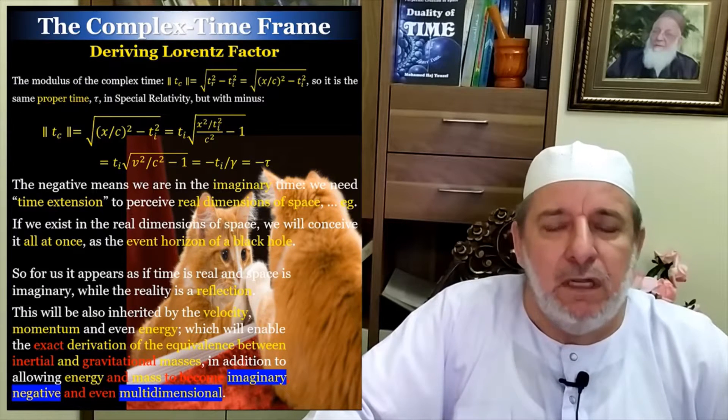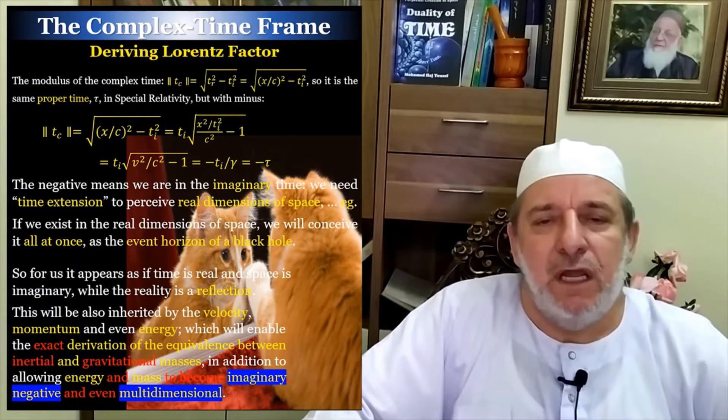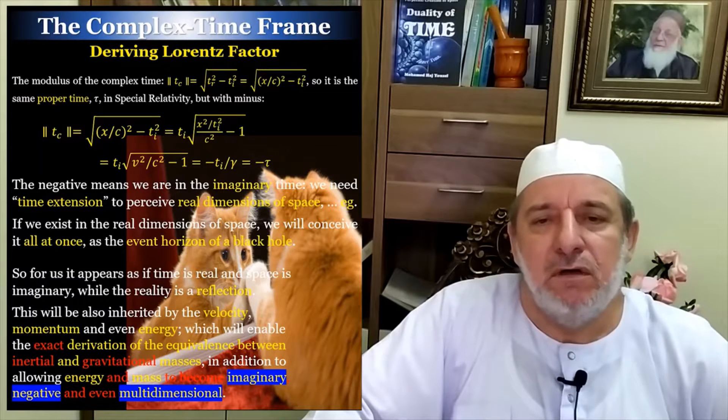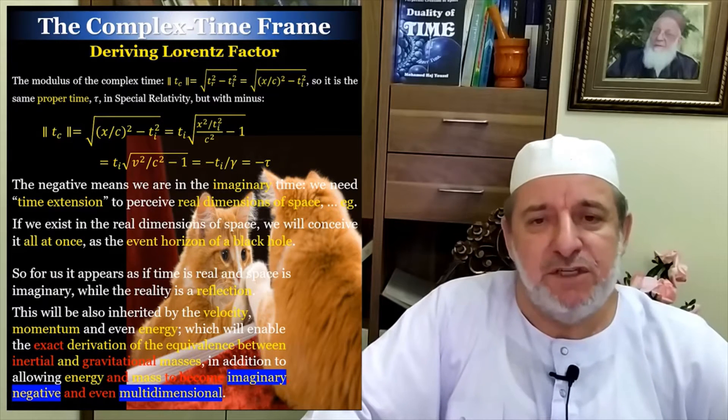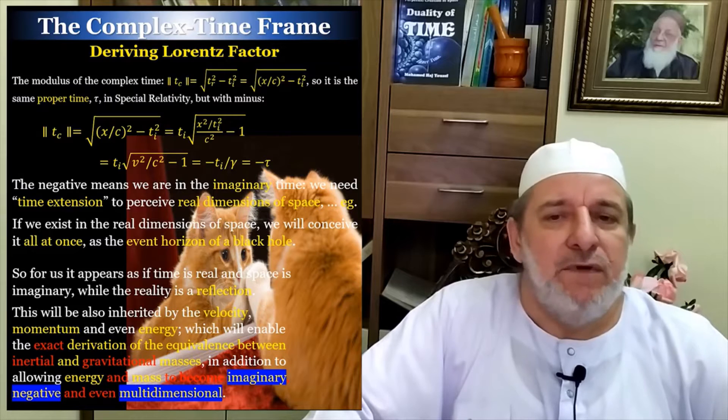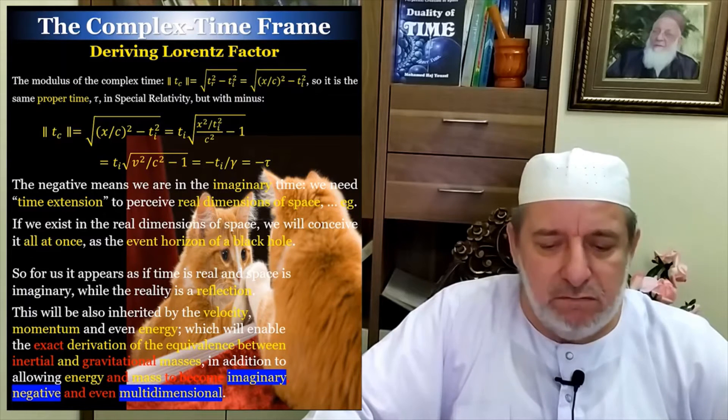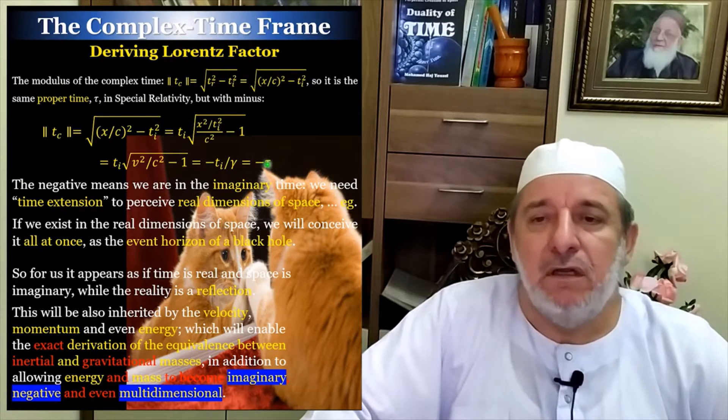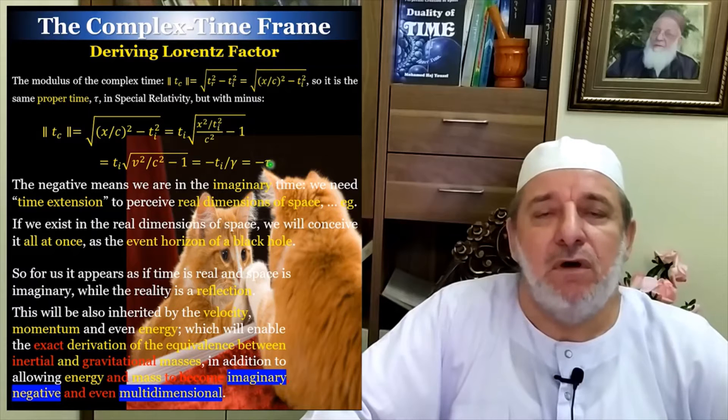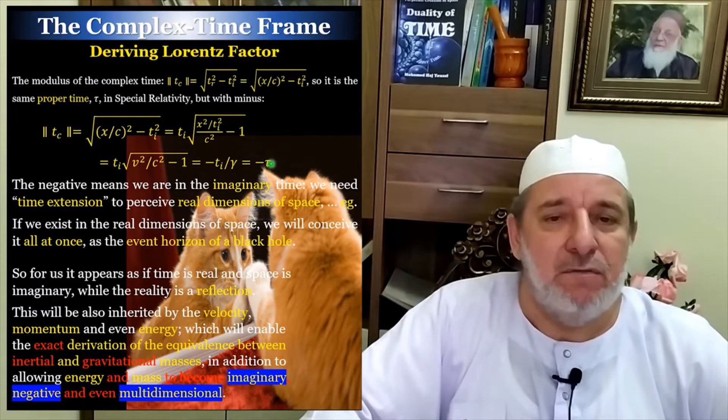Now let's derive some equations which are actually all known to you maybe from special relativity. Very simply, the proper time that is known in relativity is actually equal to the modulus of the complex time.